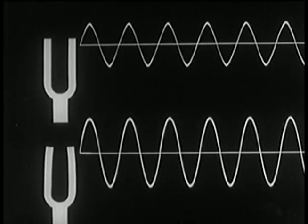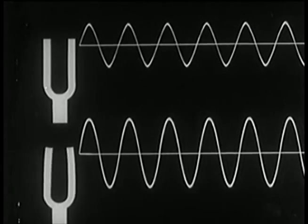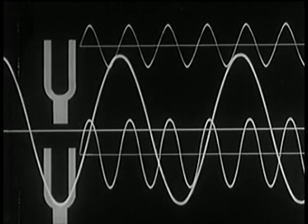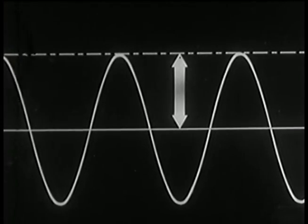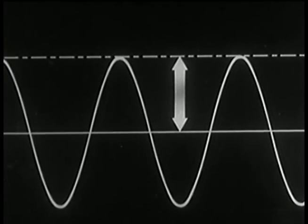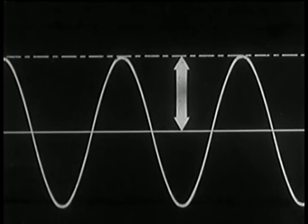The larger the disturbance or displacement of the individual particles, the greater is the height of its graph above the neutral line. This displacement above the neutral line is called amplitude, and it is amplitude that determines loudness. As the amplitude increases, its loudness increases.